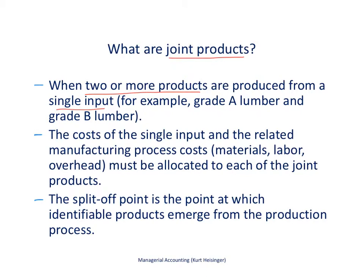If we have logs that we produce lumber from, we've got to figure out all the costs associated with that and how to allocate those costs to the lumber we are producing. We'll use the example of grade A lumber and grade B lumber. The cost of the single input and any related manufacturing process costs must be allocated to each of the joint products — materials, labor, and overhead costs.